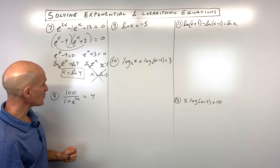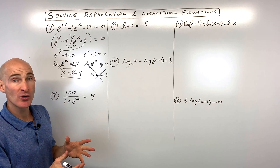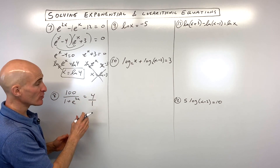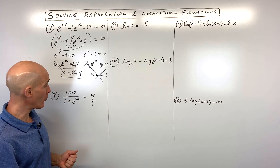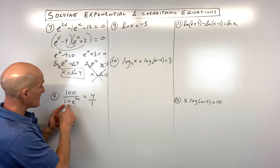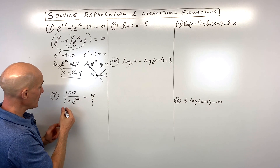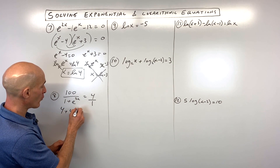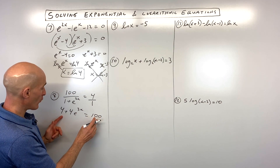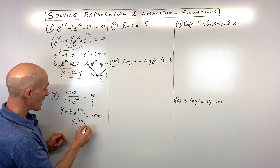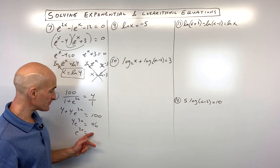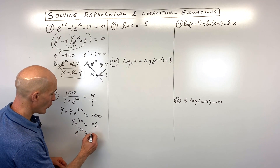For number 8, think of the left side as 4 divided by 1. When you have a fraction equal to a fraction, you can cross multiply. So 4 times 1 plus e to the 3x — distribute the 4: 4 plus 4e to the 3x equals 100. Subtract 4 from both sides: 4e to the 3x equals 96. Divide both sides by 4: e to the 3x equals 24. Now take the natural log of both sides — those are inverses — giving 3x equals natural log of 24.